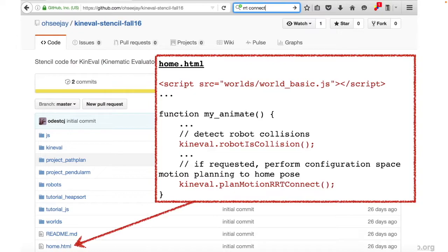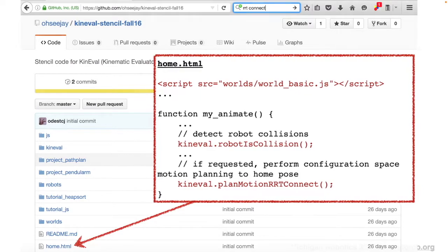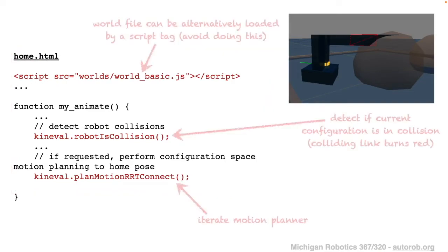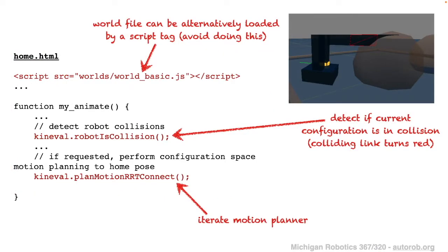Within your stencil, if you look in home.html, you'll see the three core components for this project. The first component is the world in which our planner is going to be operating — the world can be modified either on the page URL or by the script tag that loads the world JavaScript file. Within the my_animate function there are two core subroutines: the first is Knievel.robot_is_collision, which detects if the current state of the robot is in collision with the world, highlighting the colliding link in red. The second subroutine is the plan_motion_rrt_connect function, used for our motion planning.